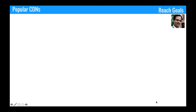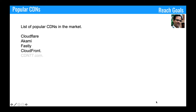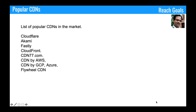Let's talk about the list of popular CDNs in the market. Some of the popular CDN infrastructures or software are Cloudflare, Akamai, Fastly, CloudFront, CDN77, CDN by AWS, CDN by GCP or Azure, and Flywheel CDN. These are some of the popular CDNs you can use for your application or projects. There are also CDNs focused primarily on video content. If you want a deep understanding of CDN, I suggest picking any one CDN, focusing on it, and trying to get a certification out of that.